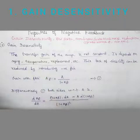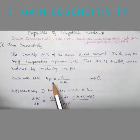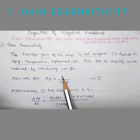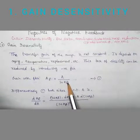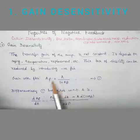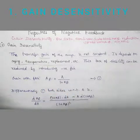Now we get into the derivation part. First we take the expression for gain with feedback. As seen in the previous video, AF equals A divided by 1 plus A·beta, where capital A represents the open loop gain or basic amplifier's gain, beta is the gain of the feedback network, and AF is the gain of the amplifier with feedback. This is equation one.